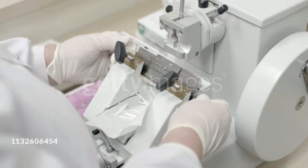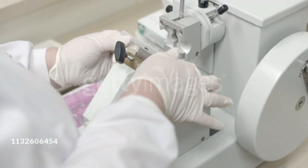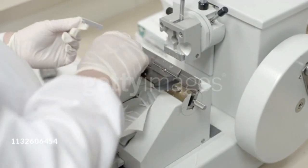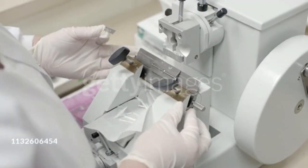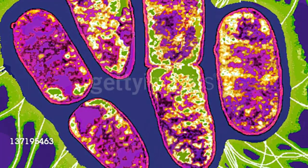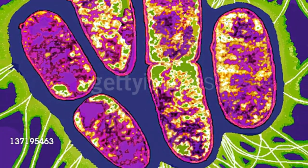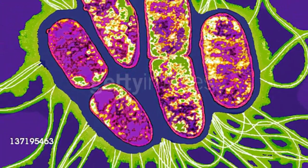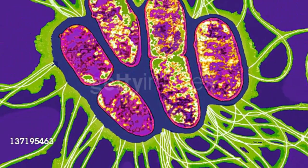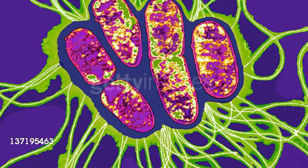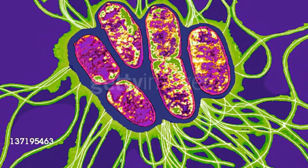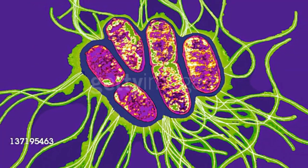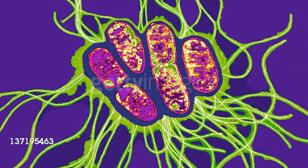6. Scanning Electron Microscopy. Examining the scanning electron microscopy technique, which provides three-dimensional images by scanning the specimen's surface, highlighting its applications in various fields from material science to biology.